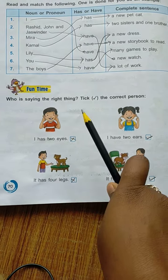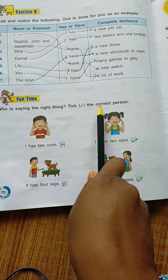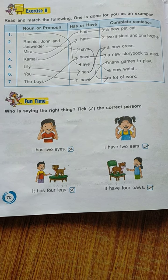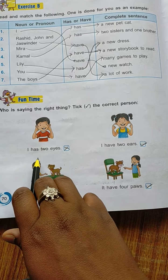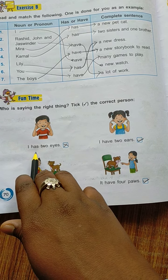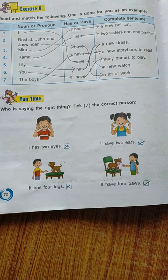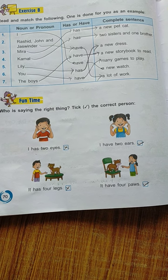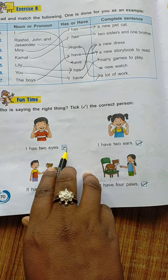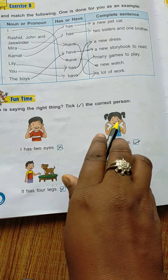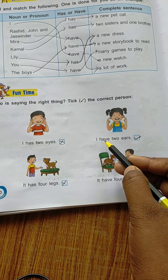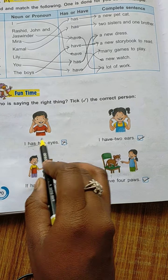This is exercise number C — who is saying the right thing? Tick the correct person. आप जो picture देख रहे हैं, वह person कौन सा सही sentence बोल रहा है उसमें हमें tick करना है। I have two eyes — correct. I has two eyes — wrong. I have two ears — it is correct. Ears plural noun है, यहाँ पर have का इस्तमाल किया, इसलिए correct। यहाँ पर has का इस्तमाल किया, इसलिए wrong।